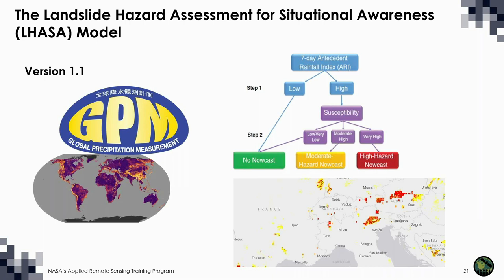LASA 1.1 takes the form of a heuristic decision tree with two steps. In step one, it takes in rainfall estimates from the last seven days from the Global Precipitation Measurement Mission, or GPM for short, compares them to historical precipitation, and determines whether the rain is heavy enough that landslides are possible. In the second step, LASA looks at the global susceptibility map in the wet areas. If the susceptibility rating is very high, LASA returns a high hazard nowcast. If susceptibility is moderate to high, LASA returns a moderate hazard nowcast. And if either rainfall or susceptibility is low, the model doesn't output a nowcast.